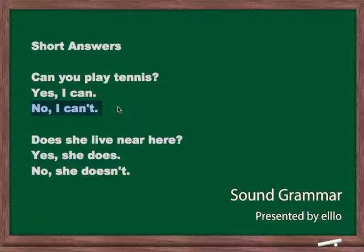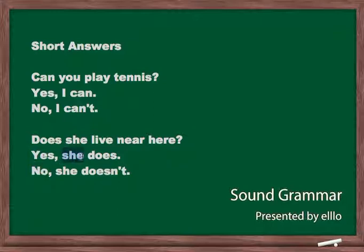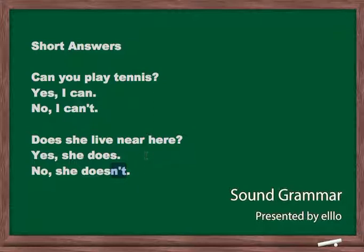This sounds natural and nice to the listener. If you only say yes or no, it doesn't sound nice — it doesn't sound like good English. So let's look at this one: Does she live near here? Yes, she does. No, she doesn't. Notice the three parts: yes or no, then the subject, then the auxiliary or modal word. And for 'not,' we always contract it. We say 'she doesn't,' not 'she does not.' We say 'can't,' not 'cannot.' It just doesn't sound natural.